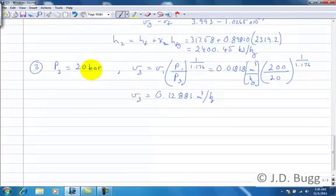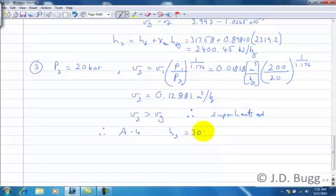So when we look at our tables at 20 bar, we find that this V3 is greater than Vg. Therefore, this is still superheated. So we need to go to table A4 for that. We go to table A4, go to the 20 bar block, go down to this value of V3, and you'll find you'll need to interpolate between two entries. But when you do that, you'll find your H3 is 3052.31 kJ per kilogram.